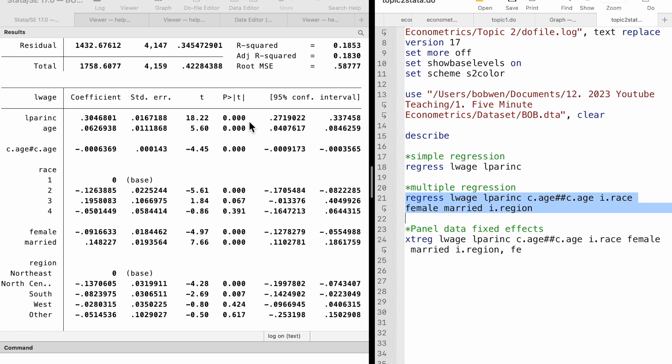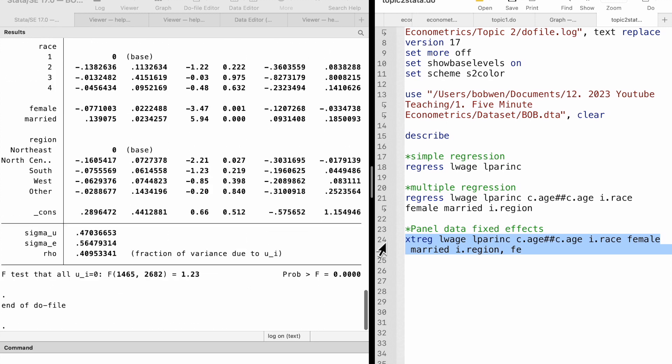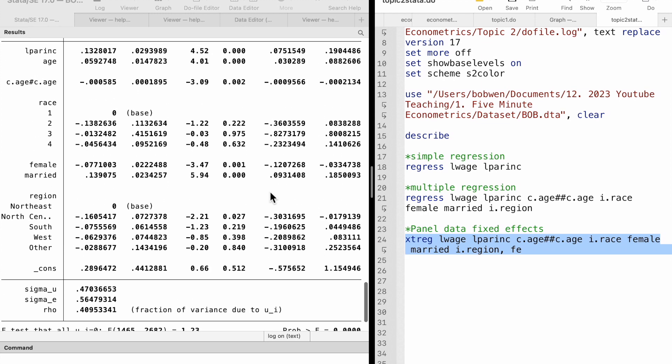but unobserved factors in the error term may cause omitted variable bias. A further step towards causality is to employ the panel data fixed effects. The family fixed effects can capture the family-specific unobserved factors, leading to an estimate of 0.13. It is a more consistent estimate for the causal effect of parents' income on adult children's earnings.